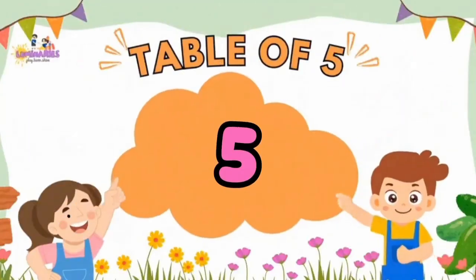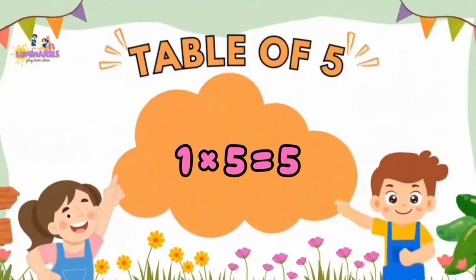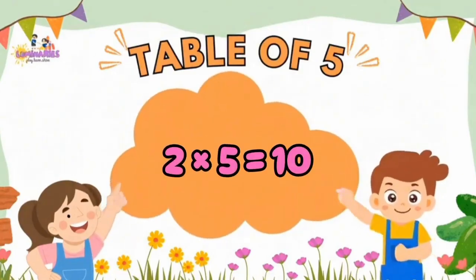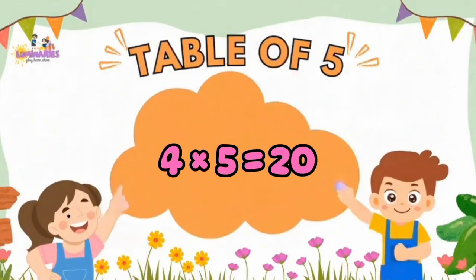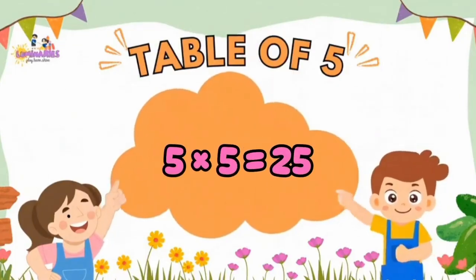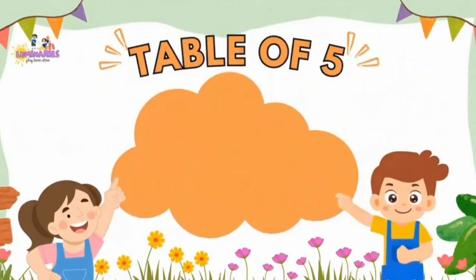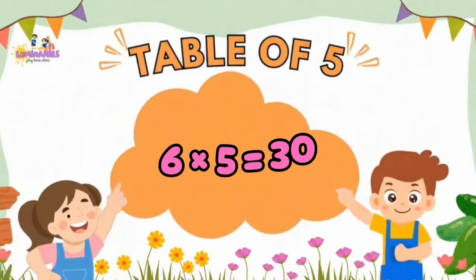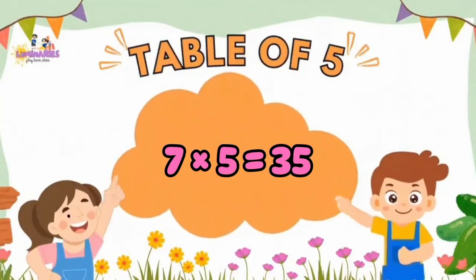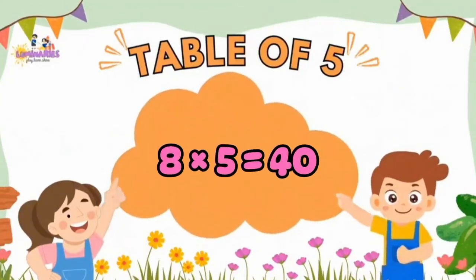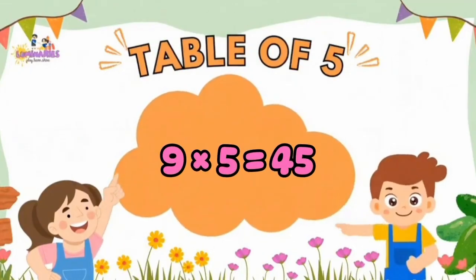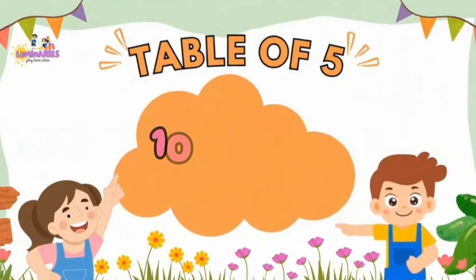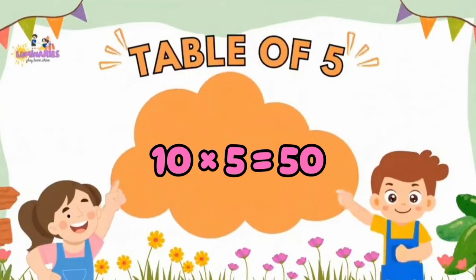Table of 5. 1 x 5 is 5. 2 x 5 is 10. 3 x 5 is 15. 4 x 5 is 20. 5 x 5 is 25. 6 x 5 is 30. 7 x 5 is 35. 8 x 5 is 40. 9 x 5 is 45. 10 x 5 is 50.